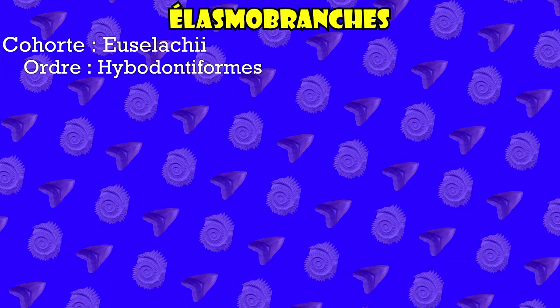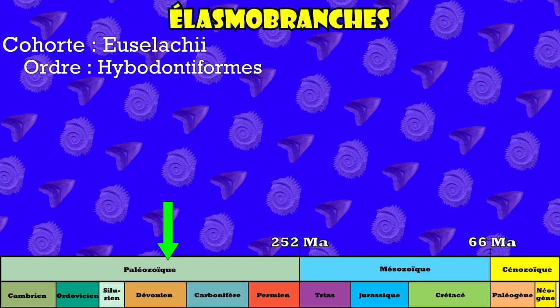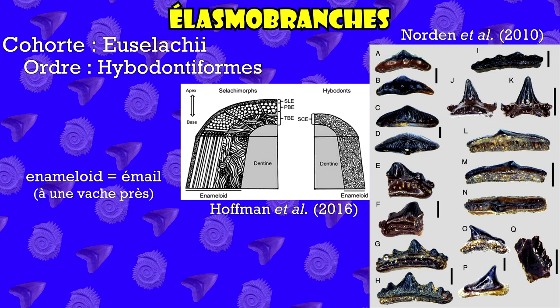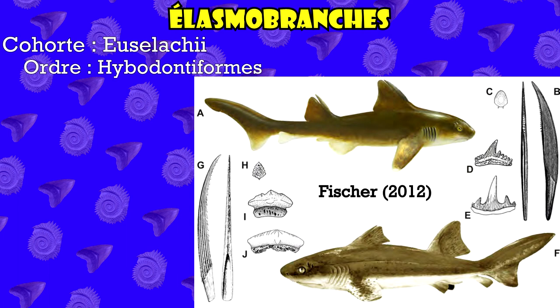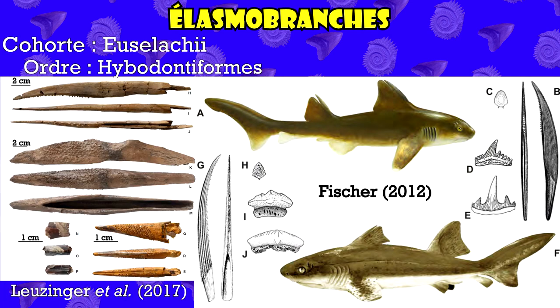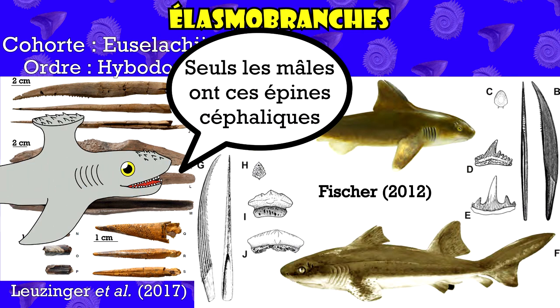Les Hybodontiformes représentent un ordre de requins présent depuis la fin du Dévonien, qui finira par s'éteindre lors de la grande crise Crétacé-Paléogène. Les dents ont une vascularisation basale particulière et un émail dentaire en une seule couche. Plusieurs squelettes complets ont été retrouvés, nous permettant d'en savoir beaucoup sur leur anatomie. Les hybodontes possèdent deux nageoires dorsales, chacune précédées par une épine dorsale convexe avec une ornementation variée. Ils possèdent également des épines céphaliques et des centres vertébraux qui ne sont pas calcifiés, contrairement aux requins modernes.